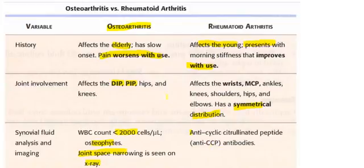To review: in rheumatoid arthritis, morning stiffness improves with activity. In osteoarthritis, the DIP and PIP joints are affected. In rheumatoid arthritis, the MCP joints are involved. Osteoarthritis presents with Heberden nodes (DIP) and Bouchard nodes (PIP).